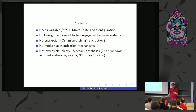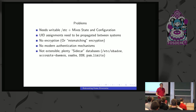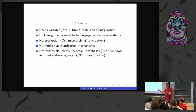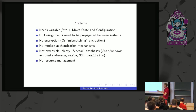Sidecar databases include: /etc/shadow, AccountsService (a GNOME thing that adds a photo and other information to the user), Samba (which maintains a database for the SID — how Windows does user management), SSH authorized keys, pam_limits for resource limits, and much more.